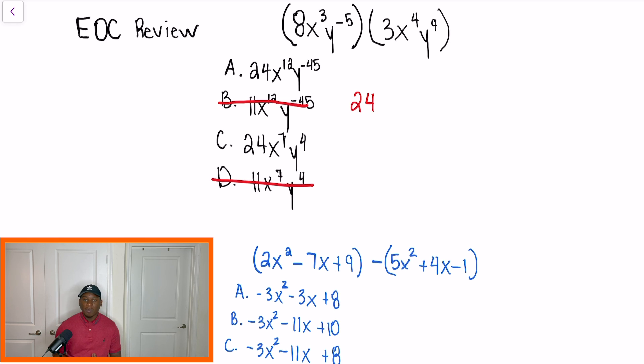And now we're talking about properties of exponents. In this situation here, we're multiplying with the same base of X and Y. All we have to do is add our exponents. So we would get 24 X to the 7th power Y to the 4th, right? Multiplied our coefficients, and then we added our exponents. So the correct answer should be C.